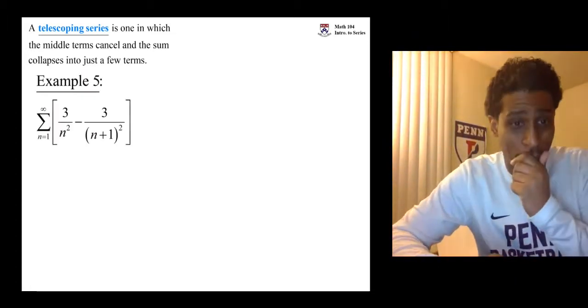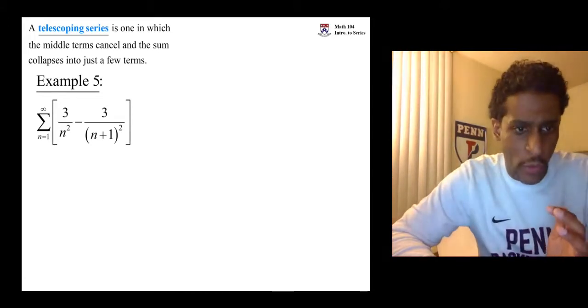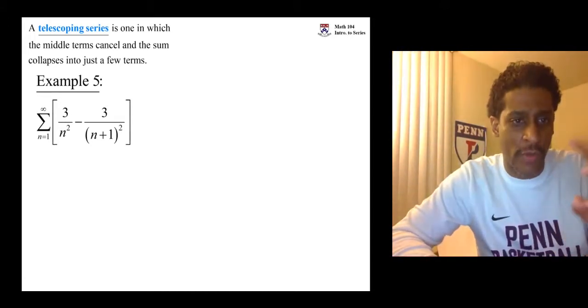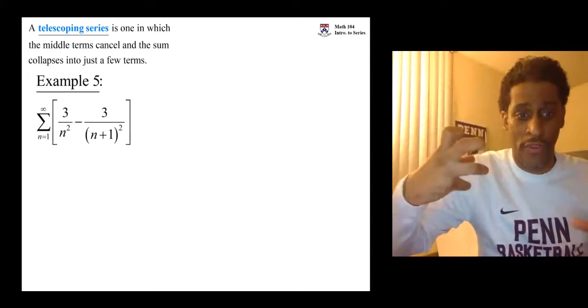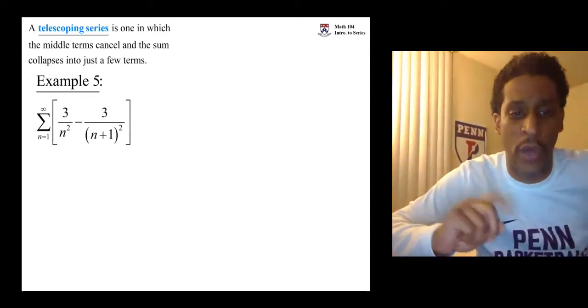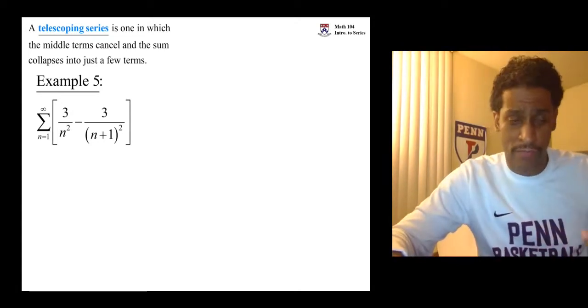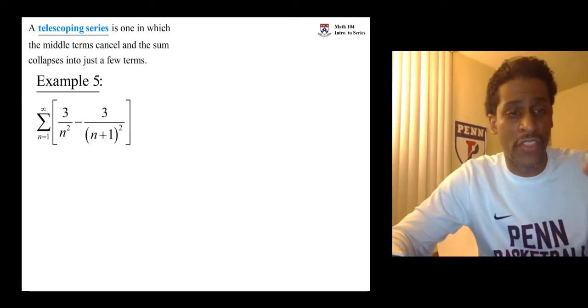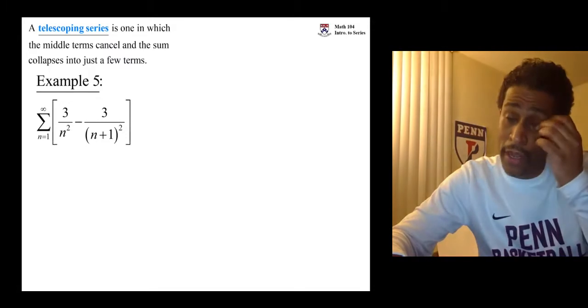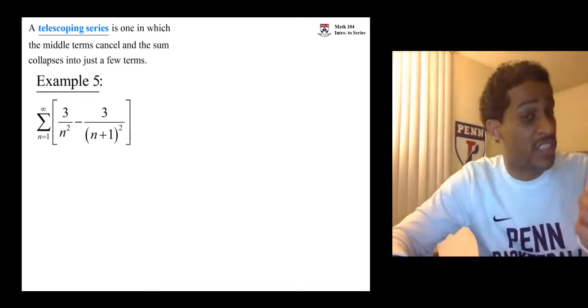Let's see an example. We have the sum as n goes from one to infinity, 3 over n squared minus 3 over the quantity of n plus 1 squared. Our job is to find the sum. First off, does it converge or diverge? If it converges, find out what the sum is.